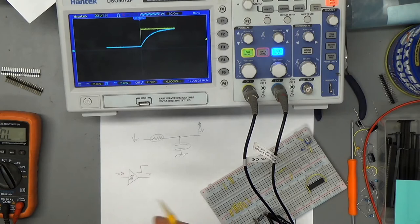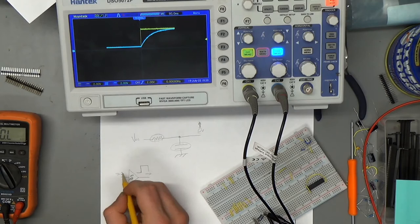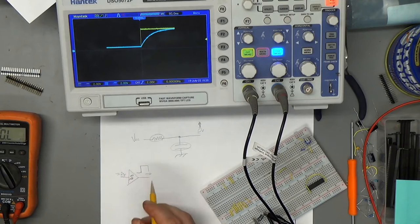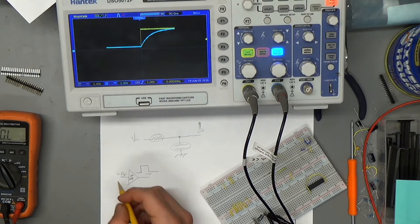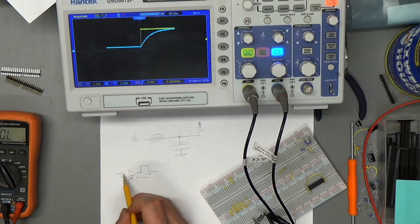And the way these work is in order for the output to transition high, the input voltage has to reach a certain potential, like say two volts - it depends on the particular device, it ought to be in the data sheets. But then for this to transition back low again, the input voltage has to drop to some other lower voltage than that, say like 1.5 volts or so. I'm just pulling those out of my ass, I don't know what they are off the top of my head. So this is, they call this input hysteresis here, right?